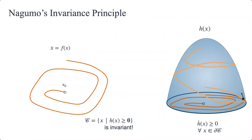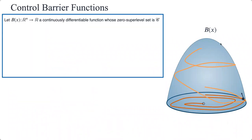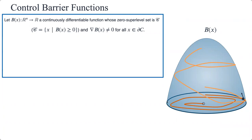Control barrier functions are based on Nagumo's invariance principle: a trajectory can decrease in safety value while inside the safe set, but as it approaches the boundary it must be non-negative. A control barrier function B is a continuously differentiable function whose zero super-level set is the constraint set, where B ≥ 0 corresponds to the safe set C and the system can be kept within C for all values of B that are not zero.